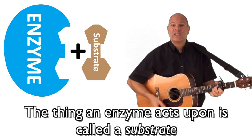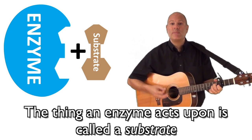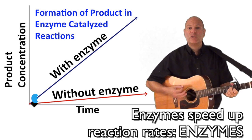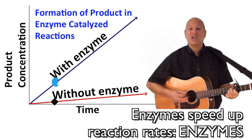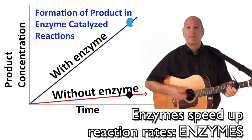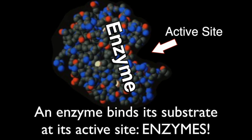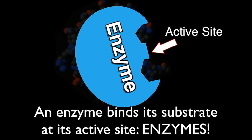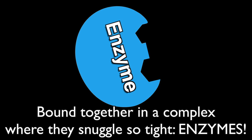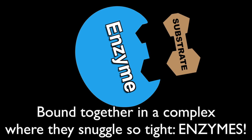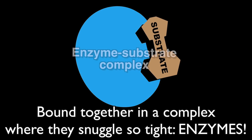The thing an enzyme acts upon is called a substrate. They fit like lock and key with complementary shape. Enzymes speed up reaction rates. An enzyme binds its substrate at its active site, bound together in a complex where they snuggle so tight.